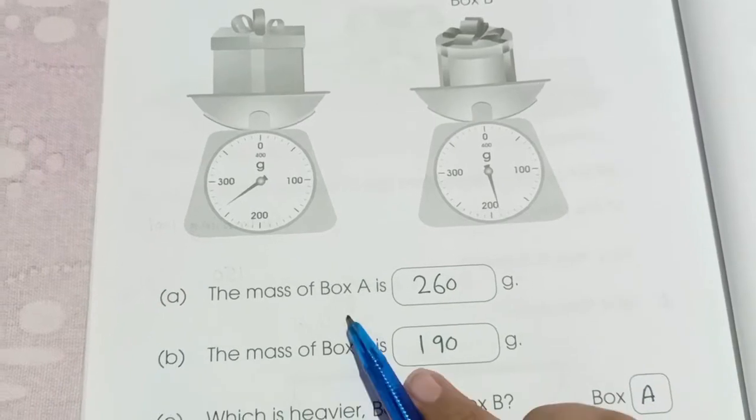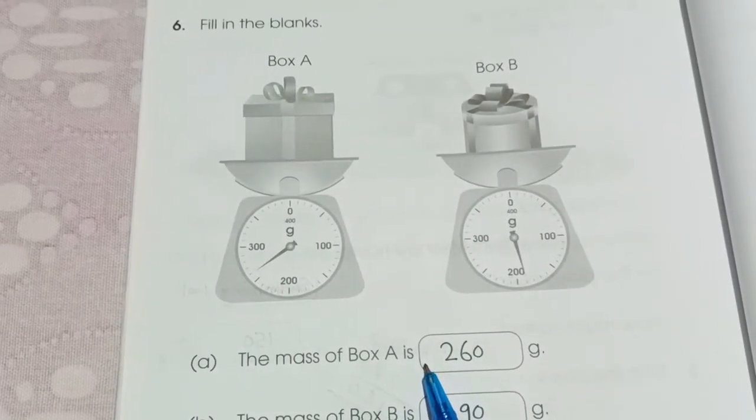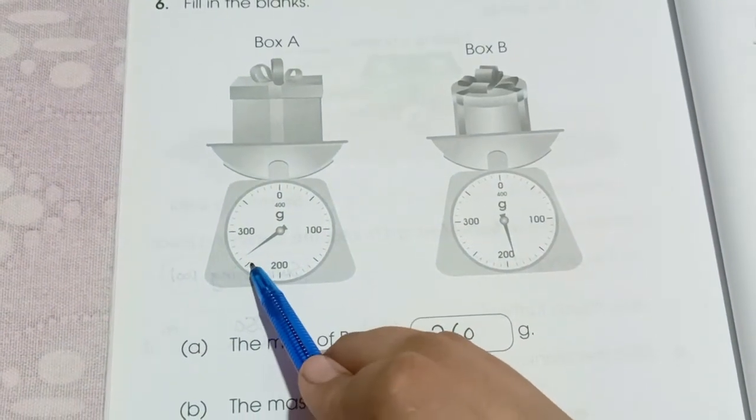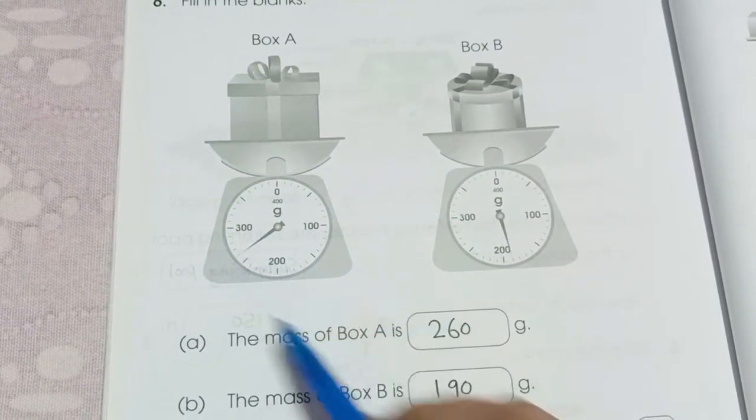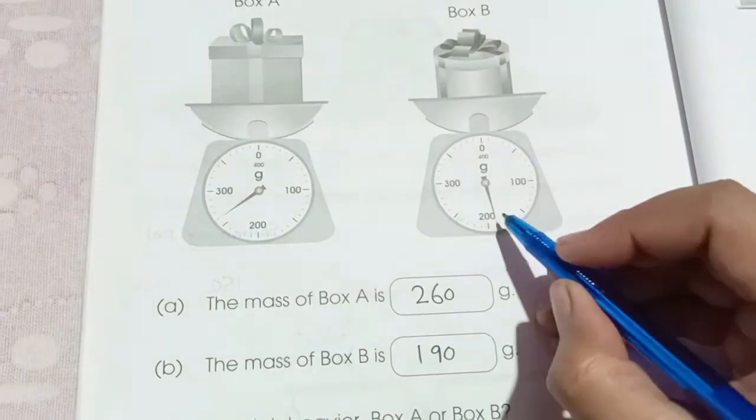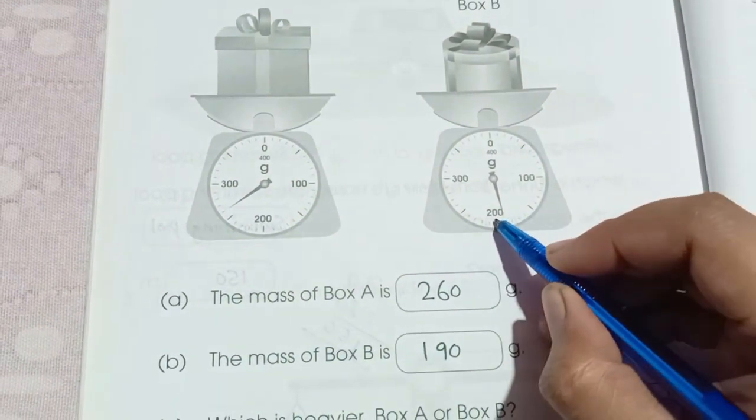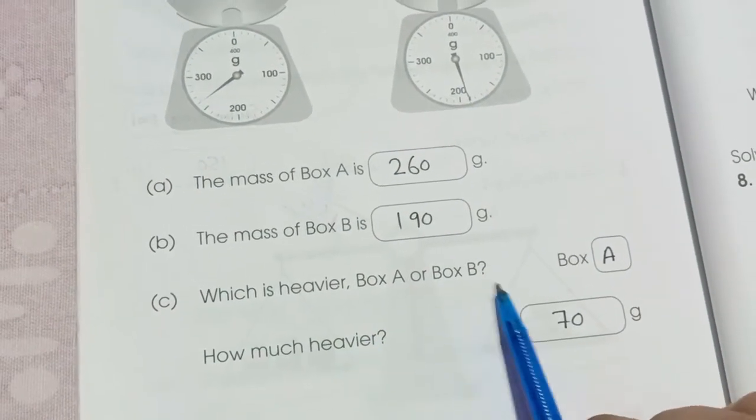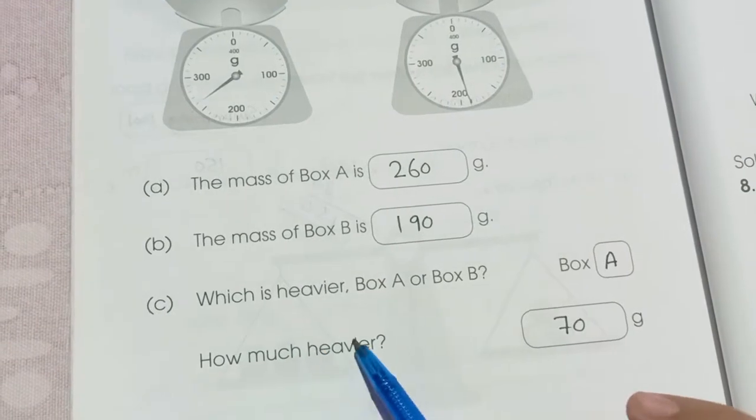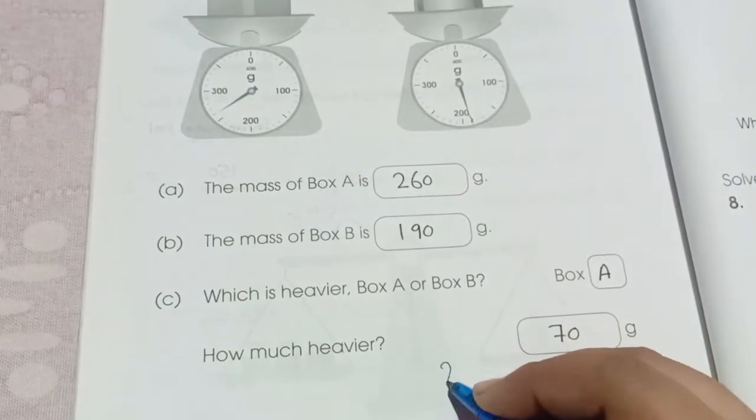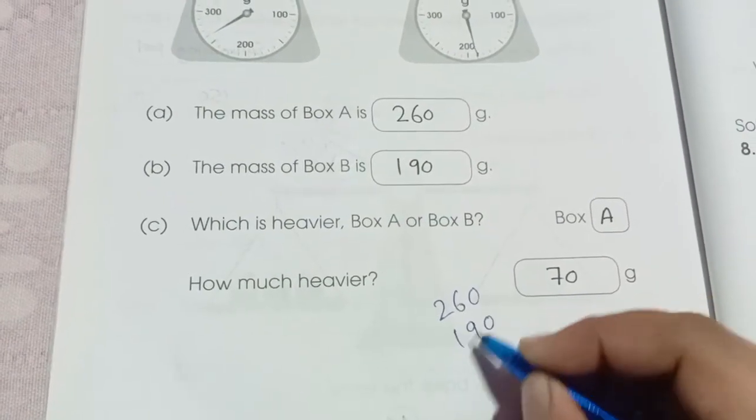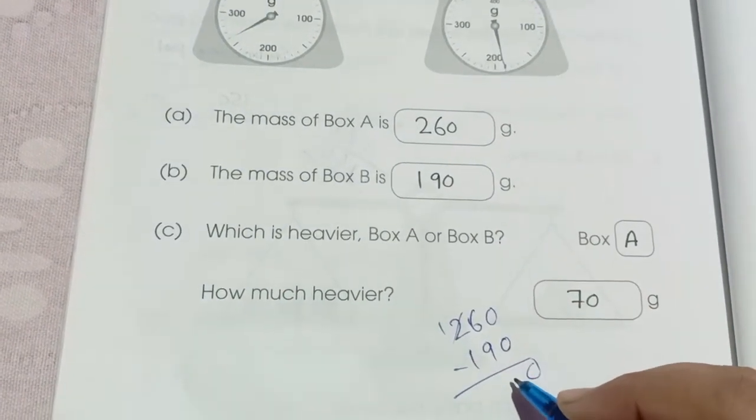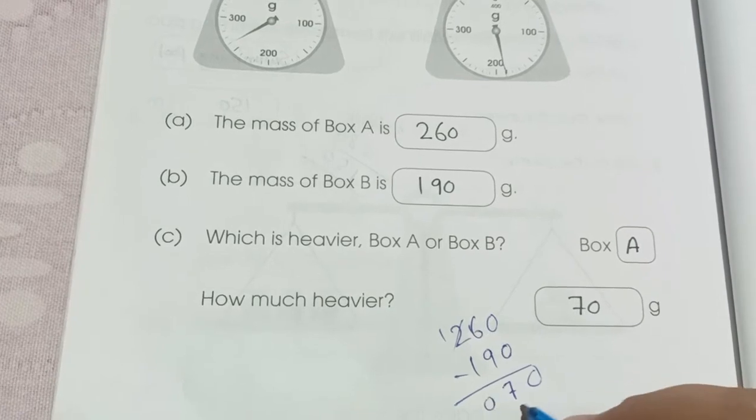Here we have the mass of box A is. Box A is, here we have 250 and this one is 260. The mass of box B is, 1 less than 200 is 190. Which is heavier, box A or B? Box A. How much heavier? So we have to subtract 260 with 190. 60, 0, 16 minus 9 is 7 and 0, 70.